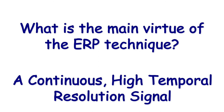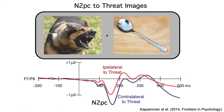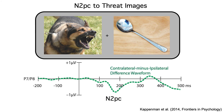A common use of this temporal resolution is to track processes that are difficult to see directly in behavior. For example, we can use the N2PC component to demonstrate that threat images automatically attract covert attention, which is difficult to see in behavior. We can see this even better in a contralateral minus ipsilateral difference waveform. This tells us that the threat and neutral images are differentially processed by the brain as early as 100 milliseconds after stimulus onset.